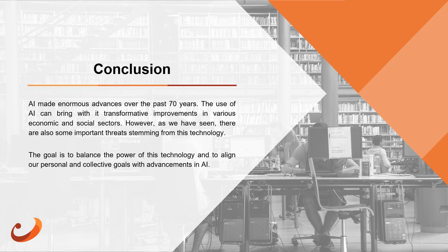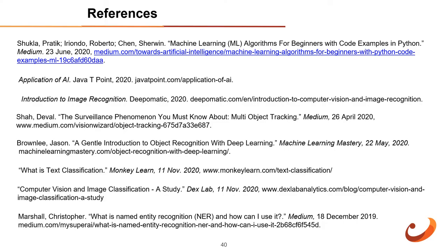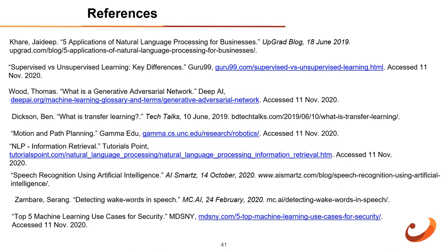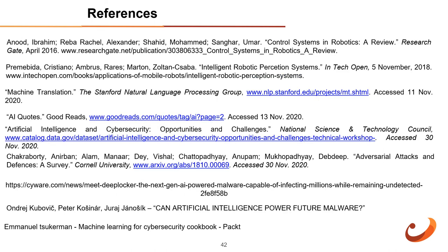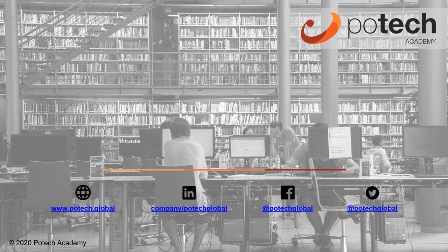To conclude: AI has made enormous advances over the past 70 years. The use of AI can bring transformative improvements in various economic and social sectors. However, as we have seen, there are also some important threats stemming from this technology. The goal is to balance the power of this technology and to align our personal and collective goals with advancements in AI. The references of this presentation can be found in the slides. We still have some time for your questions.